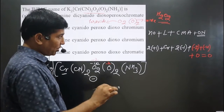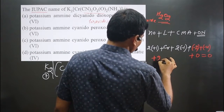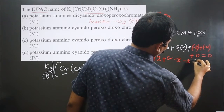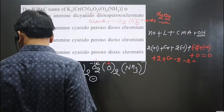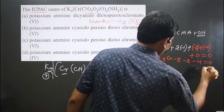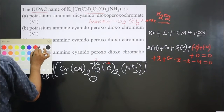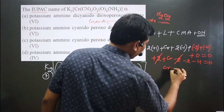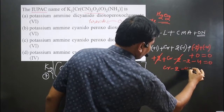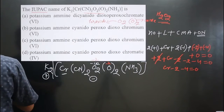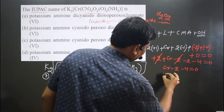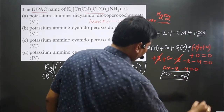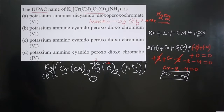Simplifying the equation: +2 + Cr + (−2) + (−2) + (−4) = 0. The +2 and −2 cancel, leaving Cr − 2 − 4 = 0, so Cr = +6. Chromium is present in the +6 oxidation state — a very interesting result.